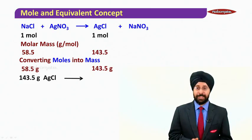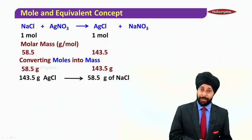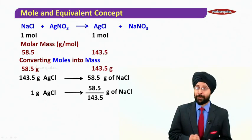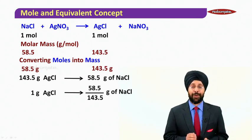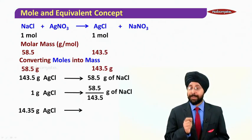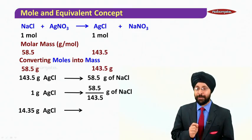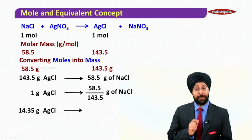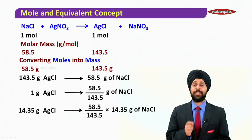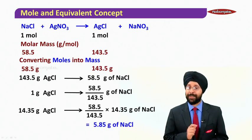Now let's do reverse analysis. 143.5 grams of AgCl is going to be produced by 58.5 grams of NaCl. So 1 gram of AgCl is going to be produced by 58.5 divided by 143.5 grams of NaCl. So 14.35 grams of AgCl is going to be produced by (58.5/143.5) × 14.35 grams of NaCl, which comes out as 5.85 grams of NaCl.